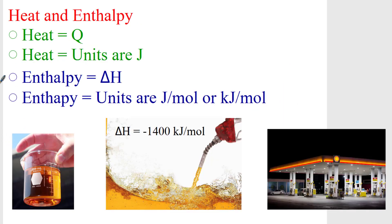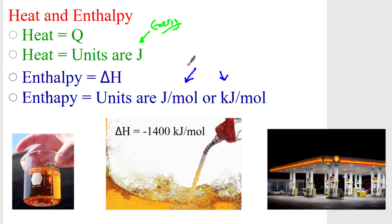That brings us to the difference between heat and enthalpy. Heat is the measurement Q and heat is in units of joules. Heat is basically energy. Whereas enthalpy is in different units — enthalpy is in joules per mole or kilojoules per mole, which means it is a ratio of how much energy per one mole.